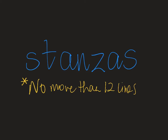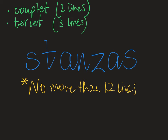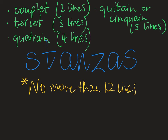The number of lines in a stanza varies, but it is uncommon for a stanza to have more than 12 lines in total. When lines have a particular relationship or rhyming pattern, they can have different names. If there are two lines that have a relationship, it's called a couplet. Three lines is a terset, four lines is a quatrain, five lines is a quitain or chinkwain, and six lines is known as a cestin.